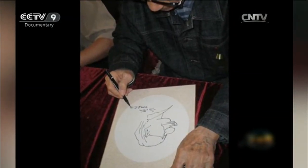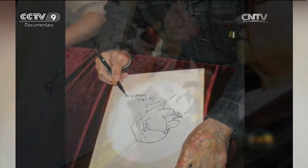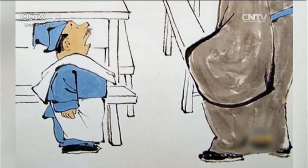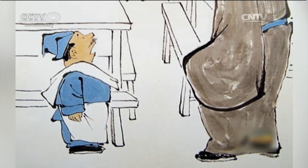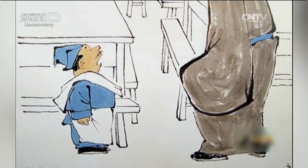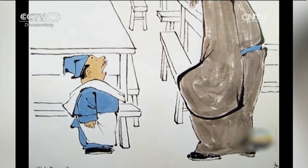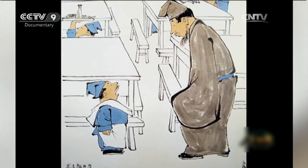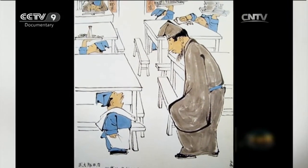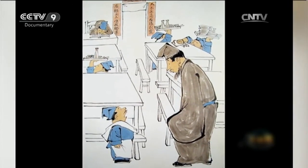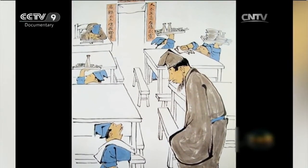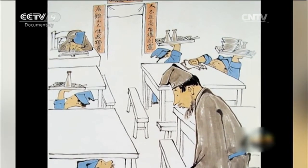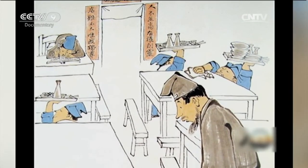One of his most famous works is Wu Da Lang's Restaurant. Through the words of a short waiter — 'my boss wouldn't hire anyone taller than me' — the artist cleverly satirizes the drawbacks of the popular personnel system. It causes people to think while laughing. The couplet on the gate reads: power rather than the height of a man matters, and I am supreme in my restaurant. The written words together with visual images form a delightful contrast, deepening the theme.